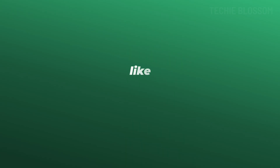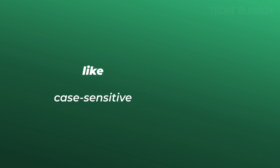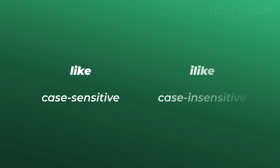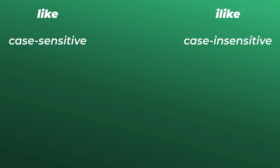The like filter in Supabase is used for case-sensitive pattern matching in text fields, while ilike is its case-insensitive counterpart. Here's the difference: like matches text exactly as written. For example, John with a capital J will not match john with a lowercase j.